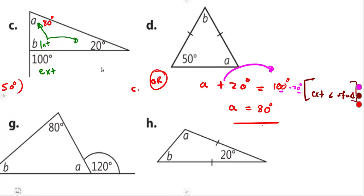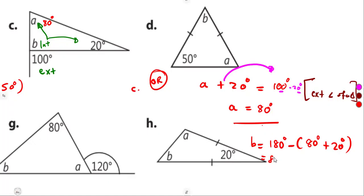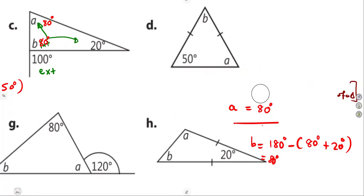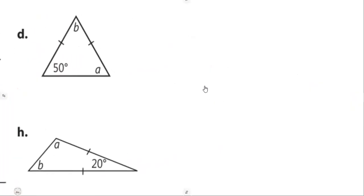To find angle B, we can use angles on a straight line or angles inside a triangle — subtracting 80 degrees and 20 degrees from 180 degrees still gives 80 degrees. As long as you use a valid property from the shape, your solution will be correct. You might approach the question differently but you must obtain the same answers.